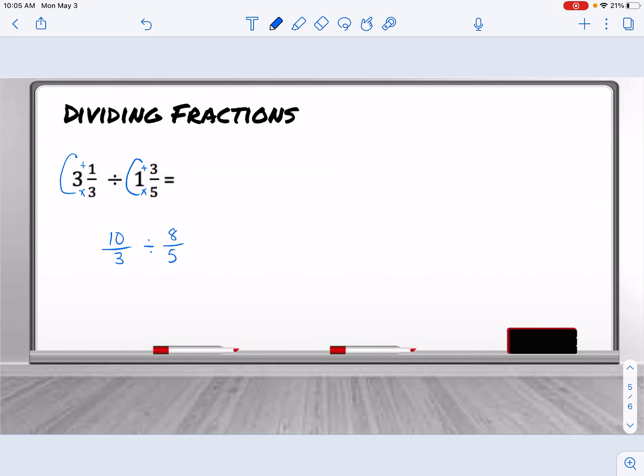Now we do common denominators. So our 3 and our 5 can make 15. So 3 times 5. So we do 5 times 10. So 50. 5 times 3. So 8 times 3 is 24.